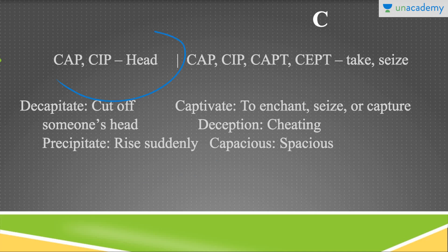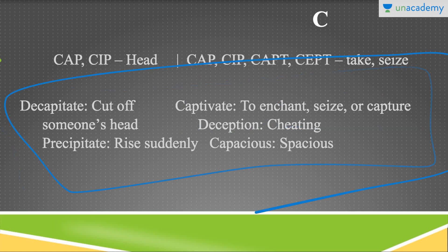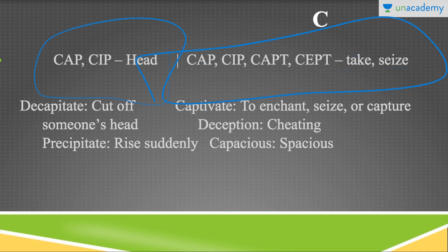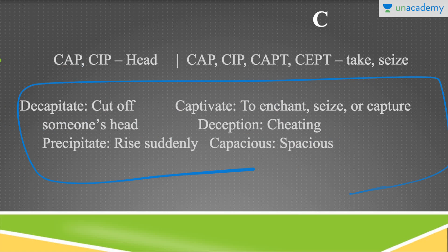But that's the thing with English — the same root C-A-P or C-I-P can have different meanings. Here, cap stands for to take or to seize — matlab kuch lena. So we have deception, which is cheating; capacious, which means spacious; and captivate, which means to enchant or to capture. I have specifically chosen these words because despite sharing the same root, the meanings are very different. Five new words we've learned: decapitate, precipitate, captivate, capacious, and deception. Make one sentence each from these five words — I need five new sentences from you.